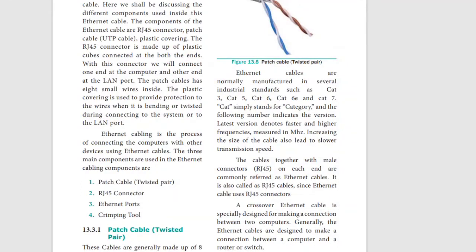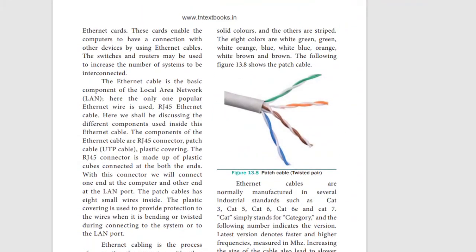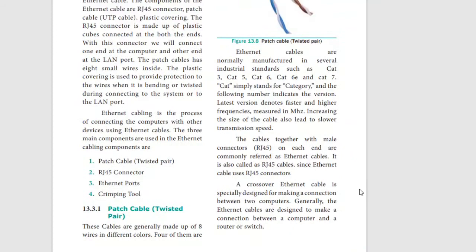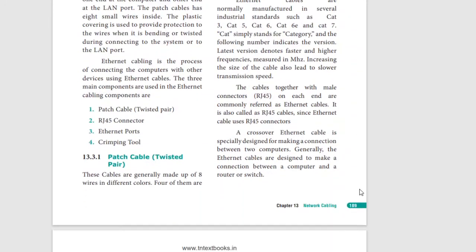Let's look at the components. First, the patch cable. You can use these cables - they come in blue color, orange color. These are all twisted pair wires. You can use them for Ethernet cable connections. Computers are all connected using these. There are also computer crossed wires.